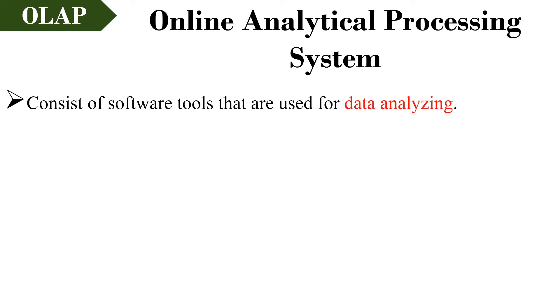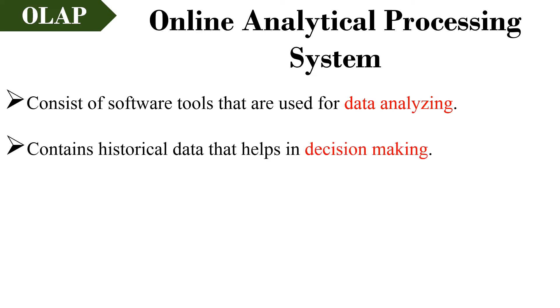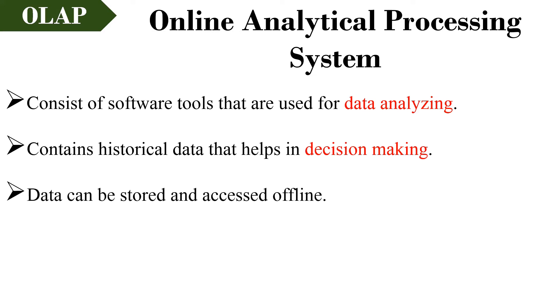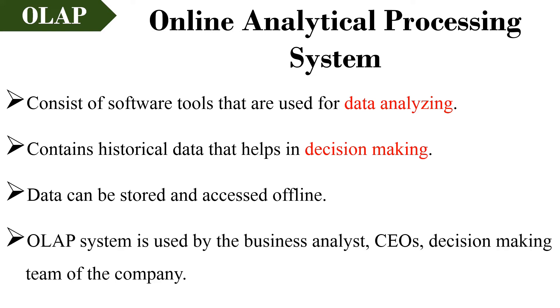Now let us talk about OLAP, that is Online Analytical Processing. This kind of operational system is used for analyzing data. As it contains historical data, it helps in making decisions for a company's benefit. In OLAP, data can be stored or accessed offline. OLAP systems are generally used by higher-level employees of the company, like business analysts and CEOs, who make decisions for the company's benefit.